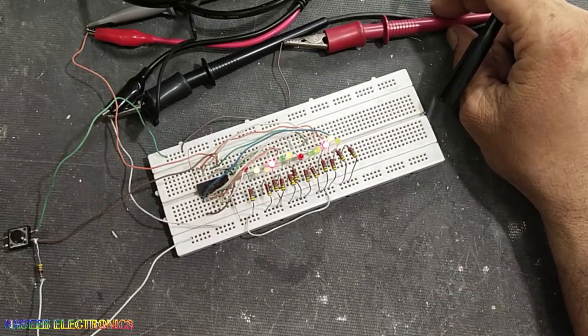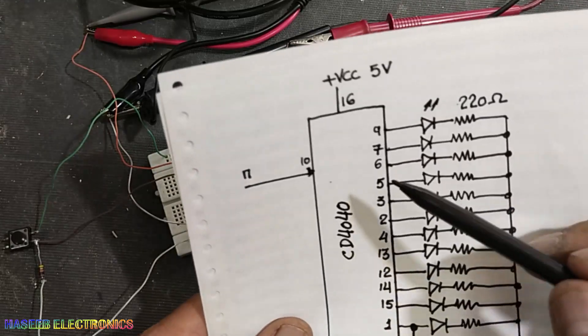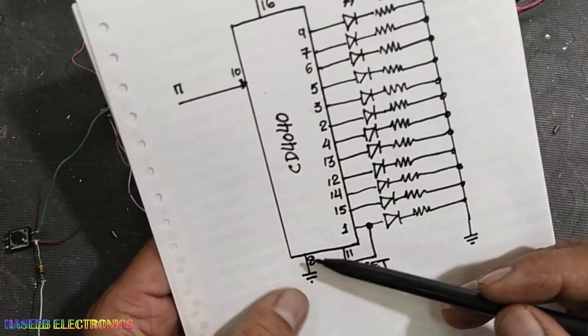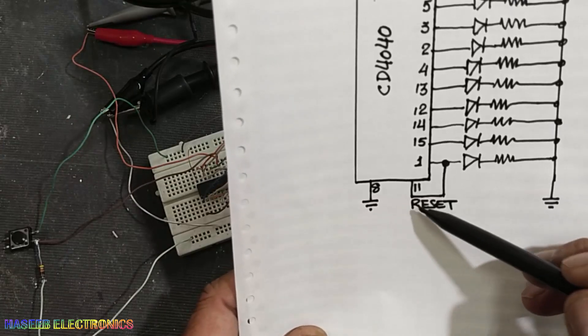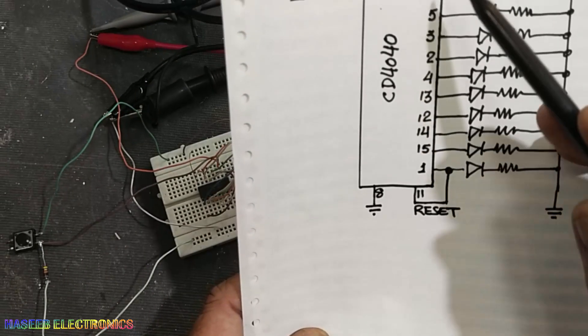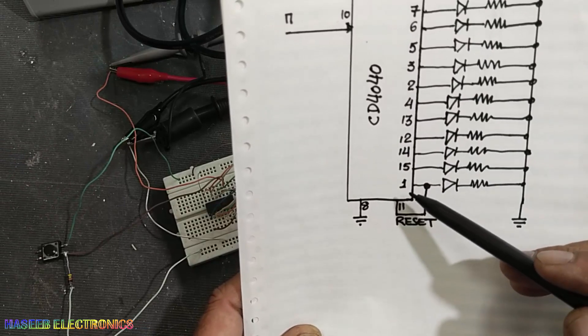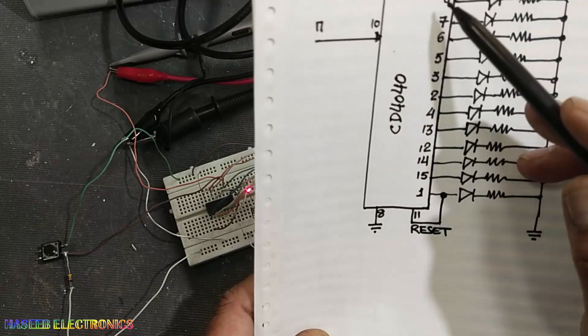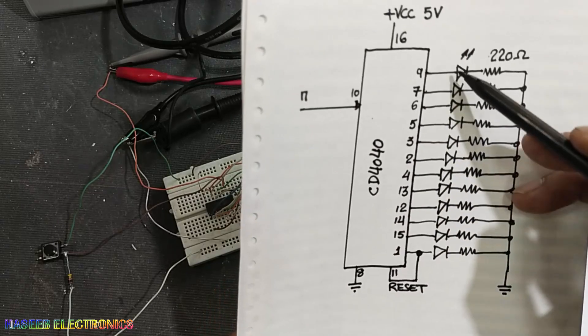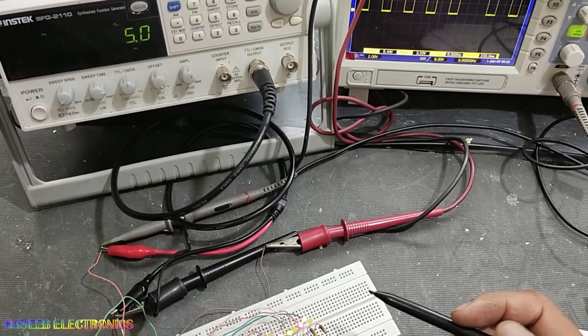I connected supply to pin number 16 - 5 volts. Ground to pin number 8. In this condition, I connected pin number 11 with pin number 1, so the last test output Q12, when it goes high, will reset the circuit and the circuit will start counting from zero again.